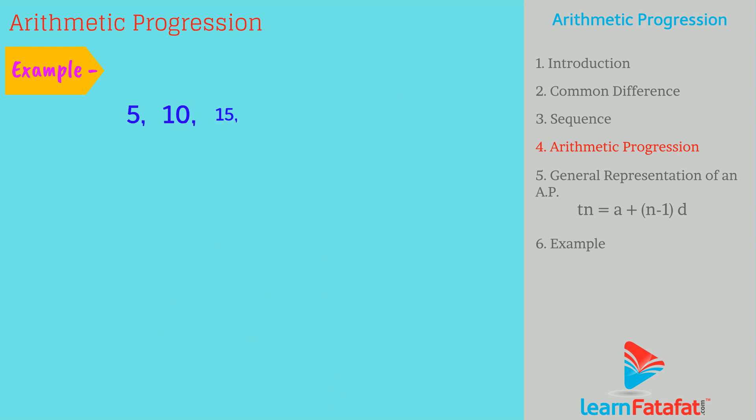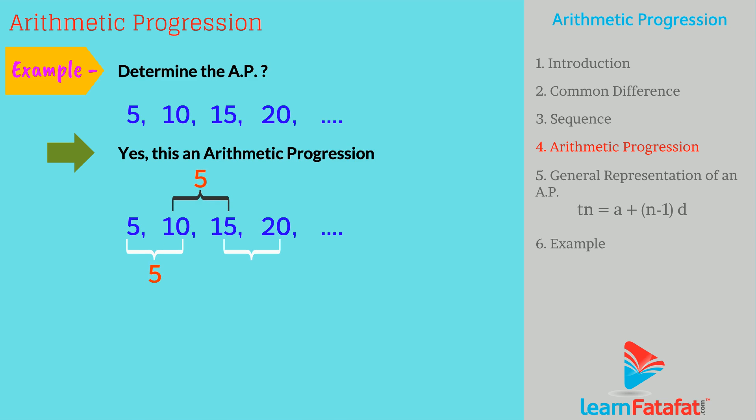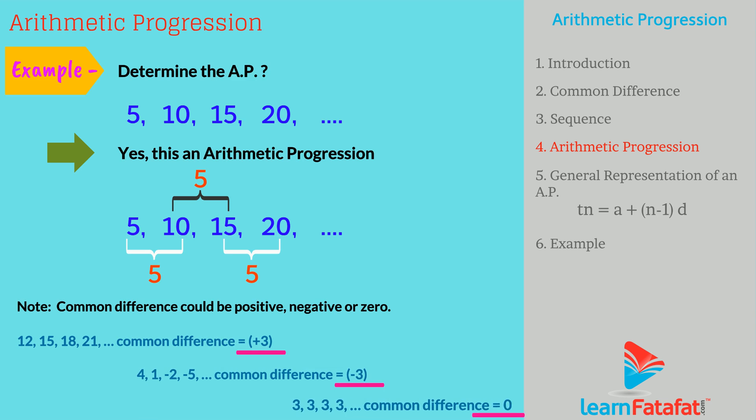Here are some numbers. Can you determine if it is an AP or not? Yes, this is an arithmetic progression because the common difference is 5. Please remember that the common difference could be positive, negative or zero.